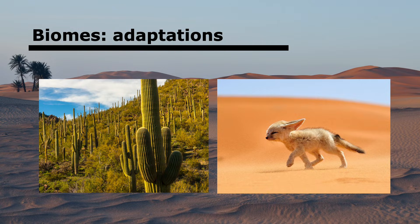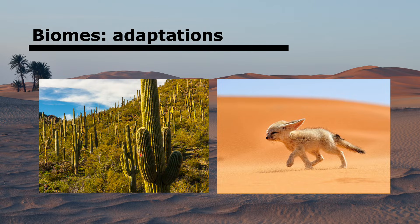Now let's look at some adaptations animals and plants have to different biomes. Hot deserts have very high temperatures during the day, very cold temperatures at night, very low rainfall, and little organic matter in soil. The saguaro cactus is adapted with wide-spreading roots to collect what little water there is, deep tap roots to get more water, fat stems to conserve water, a thick waxy cuticle to reduce transpiration, and leaves modified as spines to reduce surface area for transpiration.